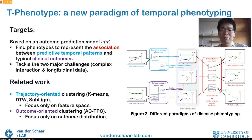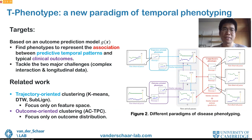To address these challenges we propose T-Phenotype, following a new paradigm of temporal phenotyping. Based on some predictive model g of patient outcomes of interest, we aim to find phenotypes capturing associations between predictive temporal patterns in patient covariates and typical clinical outcomes. This combines the two conventional paradigms of trajectory-oriented and outcome-oriented clustering, providing more refined and informative patient subgroups to clinicians.